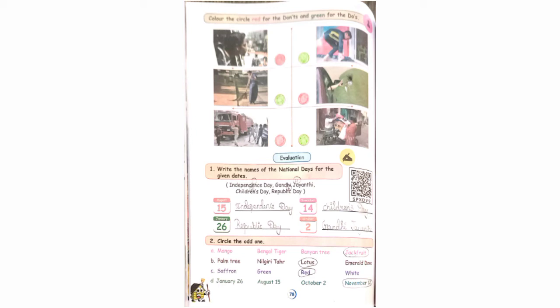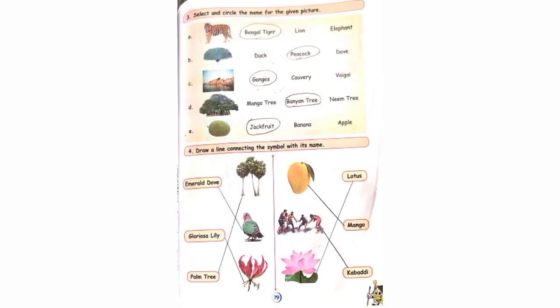Look at the second one: circle the odd one. They have given 4 options. Three belong to the same category and one belongs to a different category. You have to circle the different category. In A, circle jackfruit. In B, circle lotus. In C, circle red colour. In D, circle November 20th. Now we move on to page number 79.